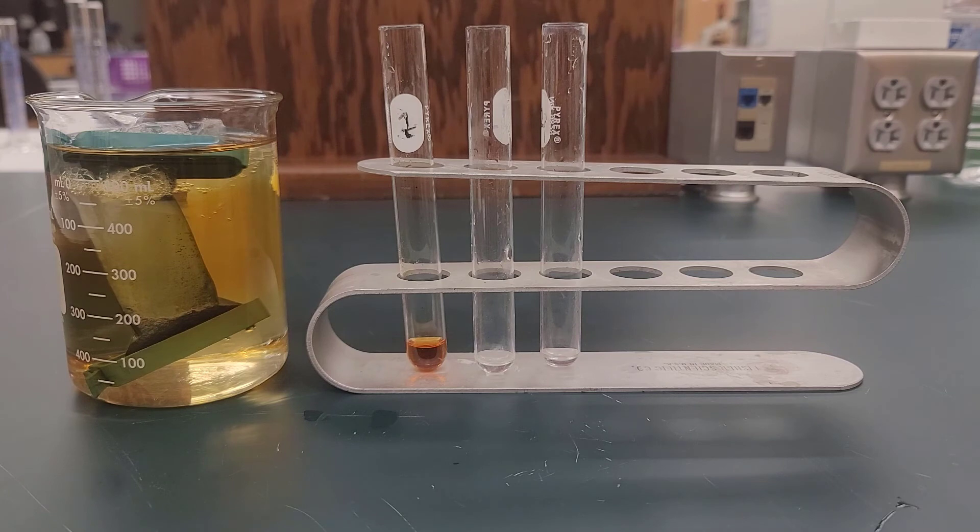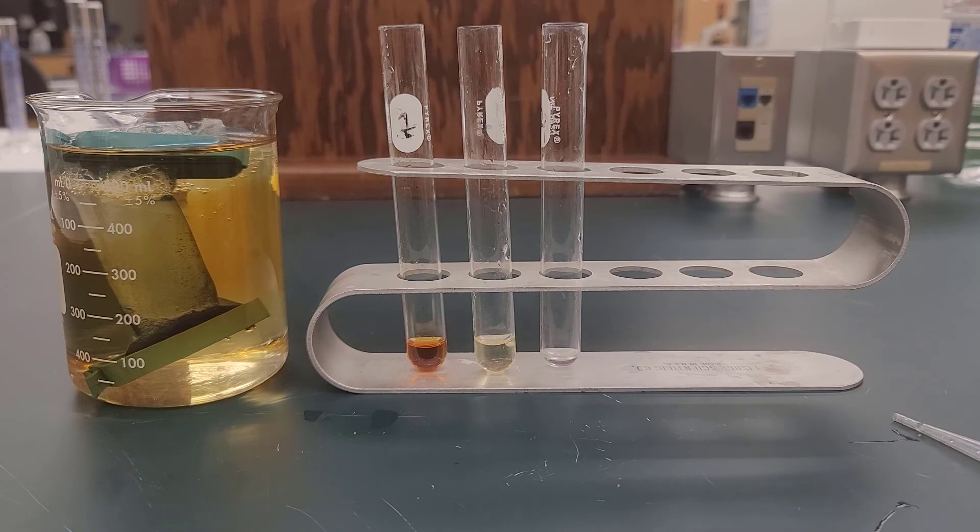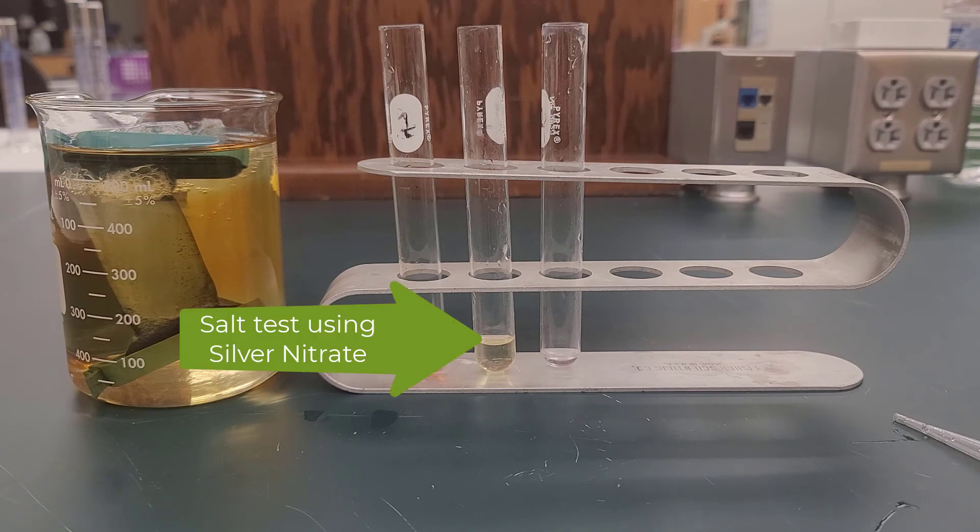Now we're going to test for salt. We take another sample from our beaker because we're trying to see if the salt came out of the bag. This time, like before, we're going to use silver nitrate to test for the presence of salt. I put my silver nitrate in, and there's my result there.